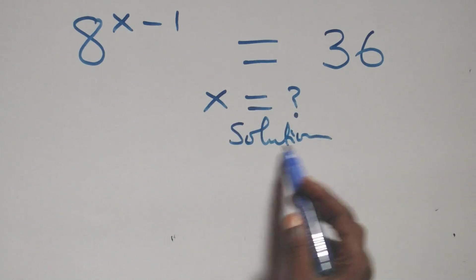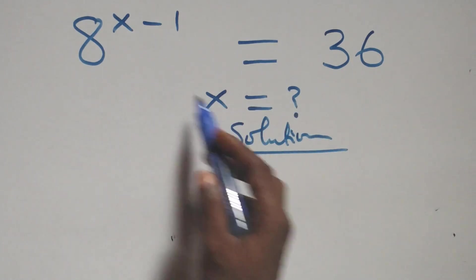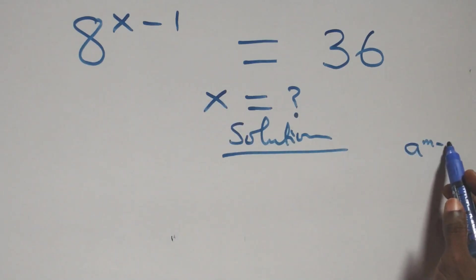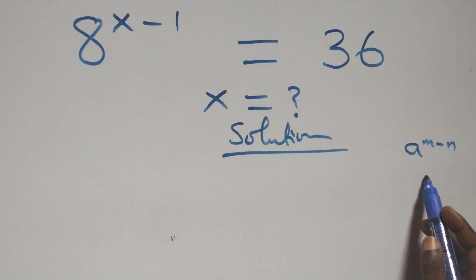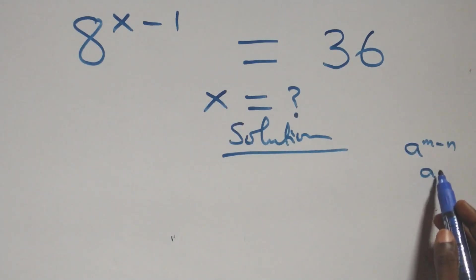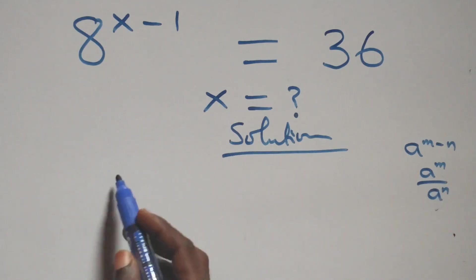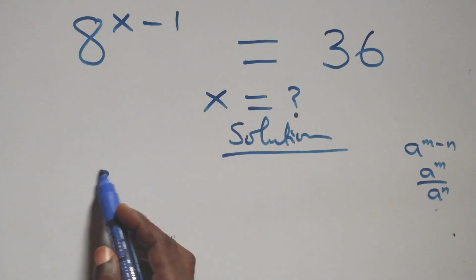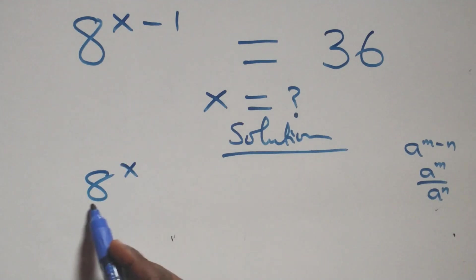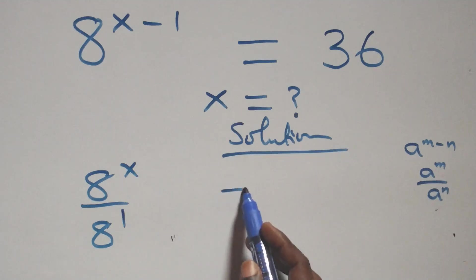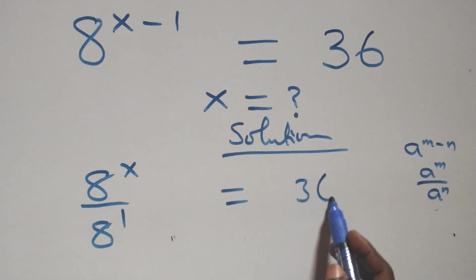We use the rule that a raised to power n minus n equals a raised to power n over a raised to power n. This gives us a raised to power x over a raised to power 1, which equals 36.